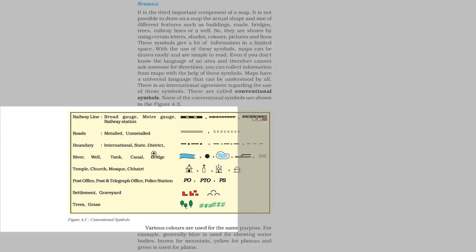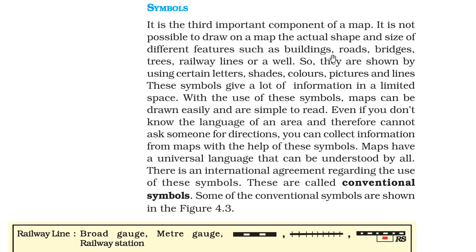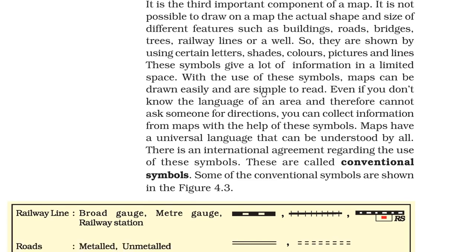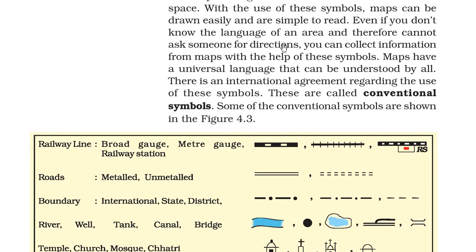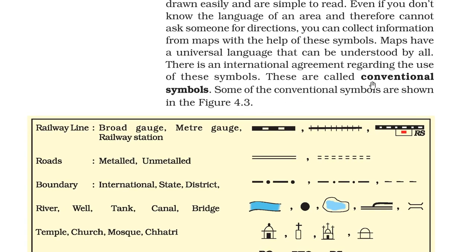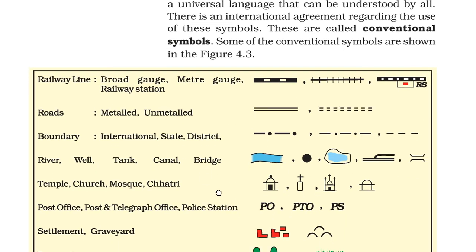The third important component of a map is symbols. It is not possible to draw a map with the actual size and shape of different features such as buildings, roads, bridges, trees, railway lines, or a well. So they are shown using certain letters, shades, colors, pictures, and lines. These symbols give a lot of information in a limited space, and maps can be drawn easily and are simple to read. Even if you don't know the language of an area, you can collect information from the map with the help of symbols, as symbols are known to everyone. Maps have a universal language. There is an international agreement regarding the use of these symbols, and they are called conventional symbols.